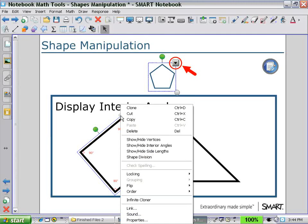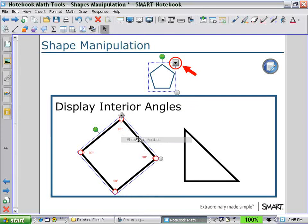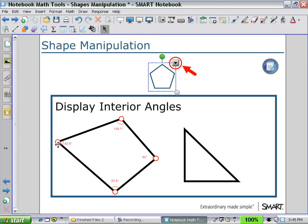Selecting the arrow pull down menu, we can show and hide the vertices again. Select one vertex and drag, and as you drag the vertex around, you can see that the angles recalculate.